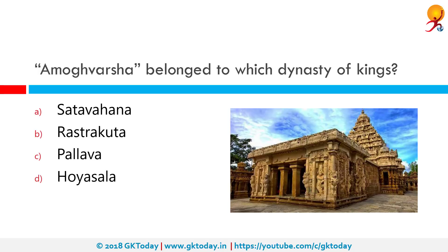Amogvarsha belonged to which dynasty of kings? The correct answer is Rashtrakuta. Amogvarsha I, also known as Amogvarsha Nrupatunga I, ruled between 800 and 878 CE. He was a Rashtrakuta emperor — in fact the greatest ruler of the Rashtrakuta dynasty and one of the greatest emperors of India. His reign of 64 years is one of the longest precisely dated monarchical reigns on record.